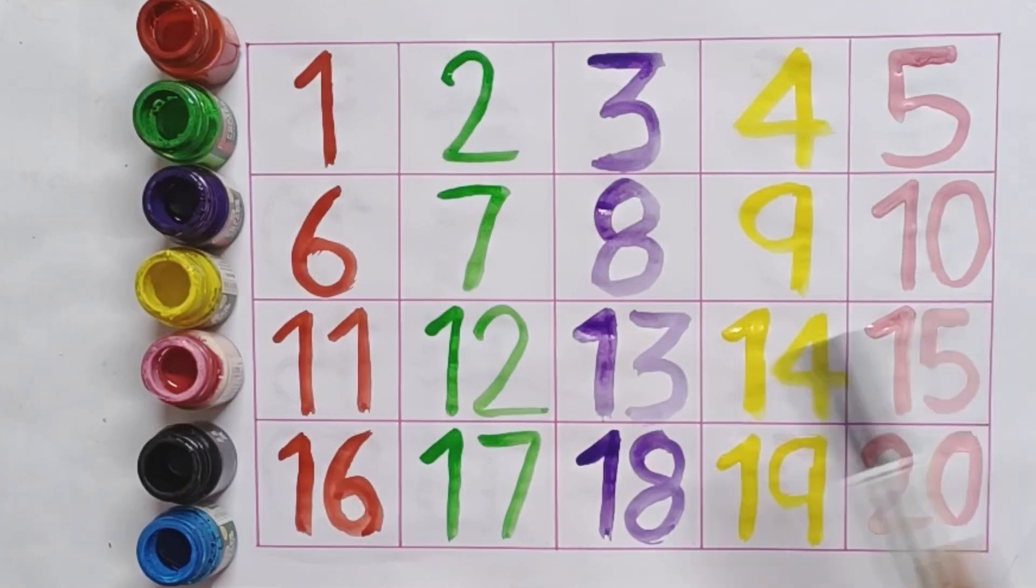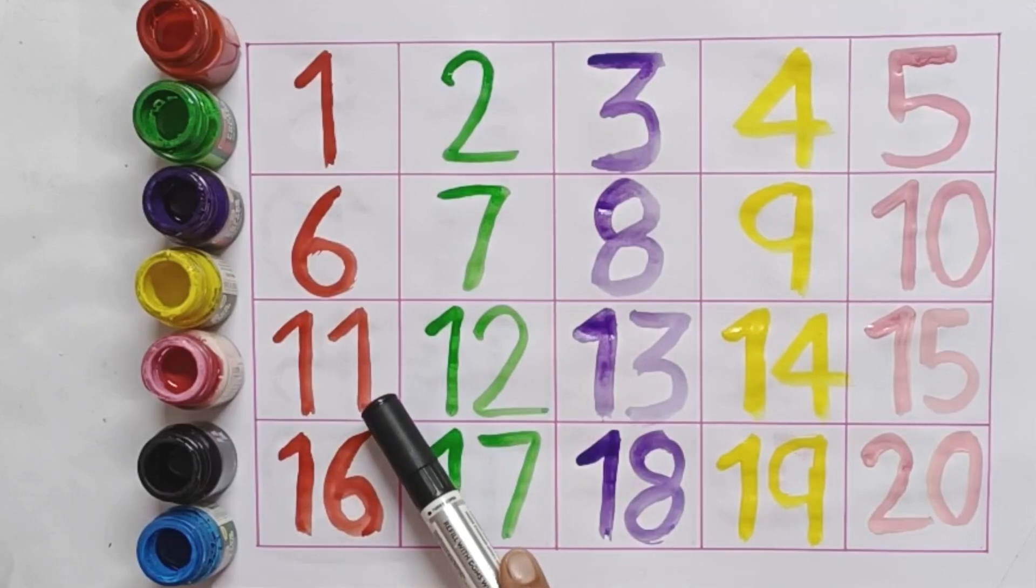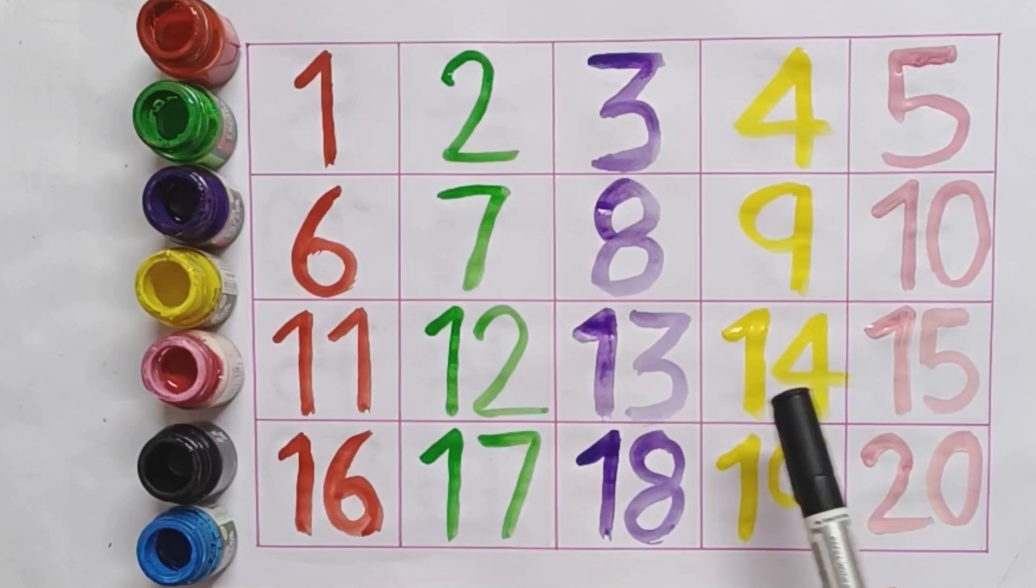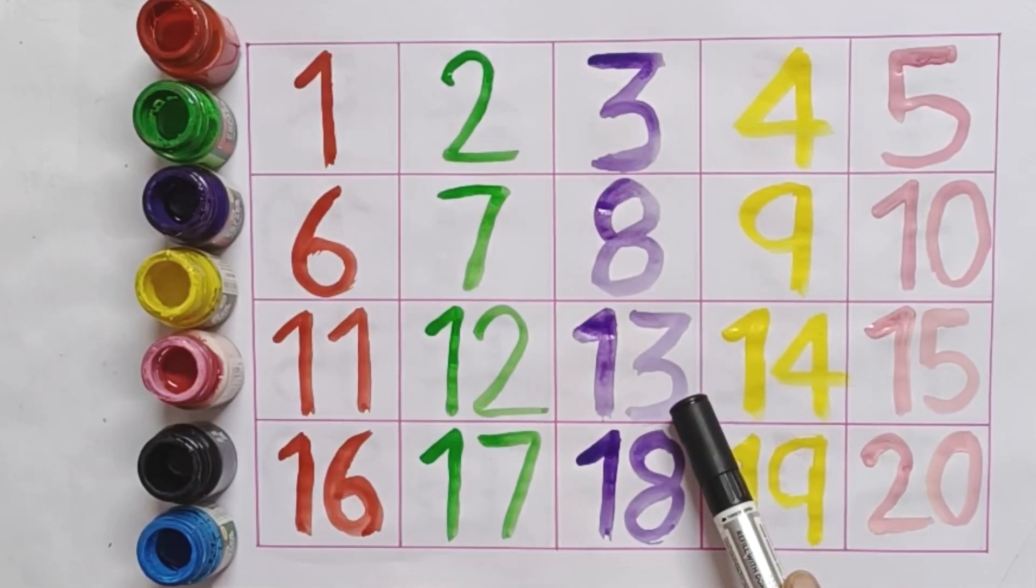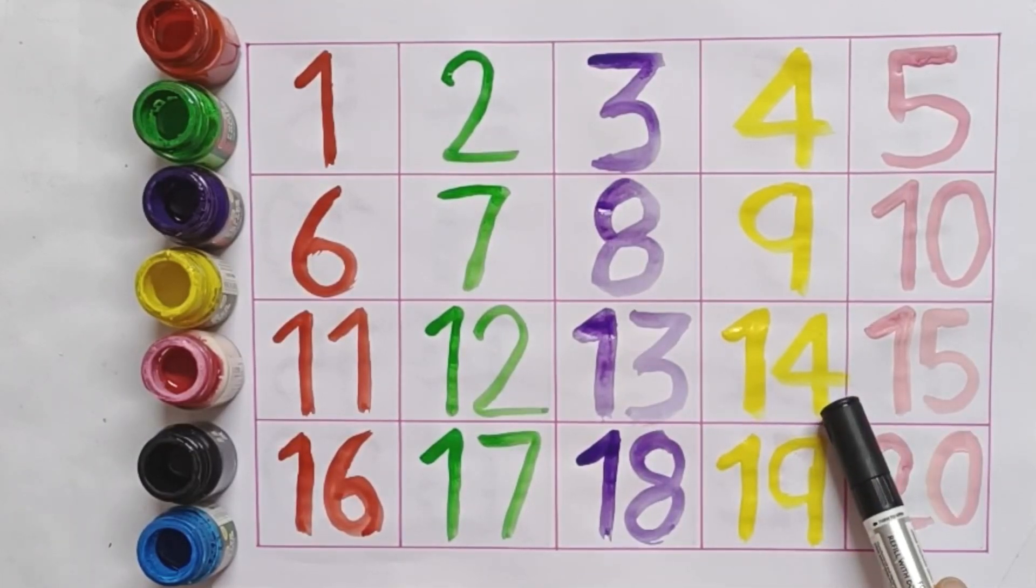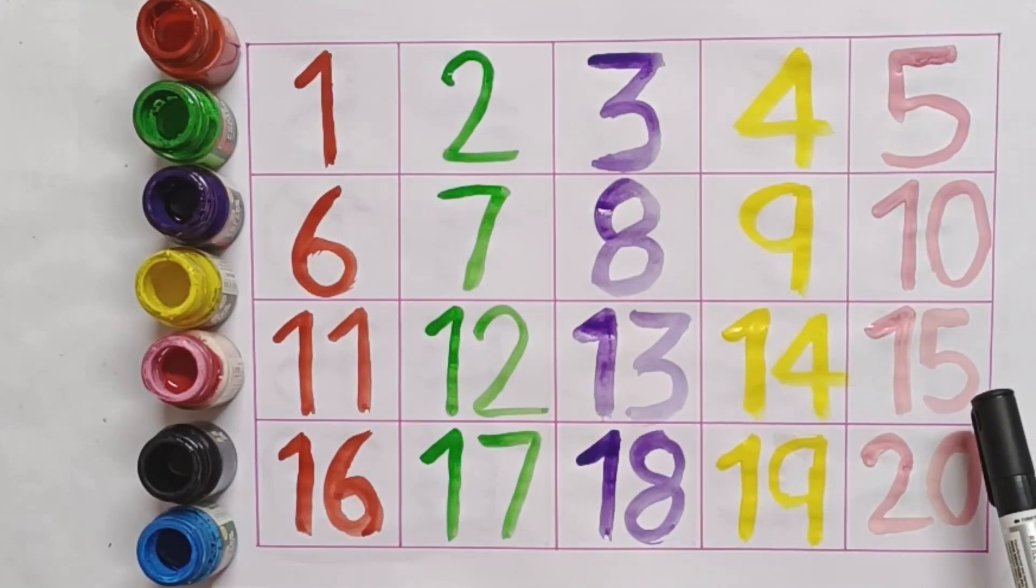11. E-L-E-V-E-N-11. 12. T-W-E-L-V-E-12. 13. T-H-I-R-T-E-E-N-13. 14. F-O-U-R-T-E-E-N-14. 15. F-I-F-T-E-E-N-15.